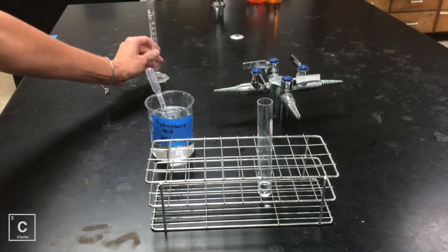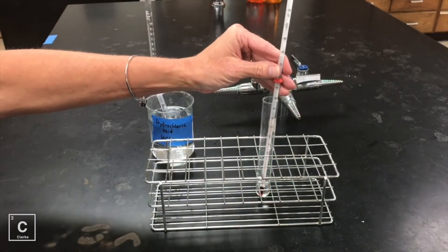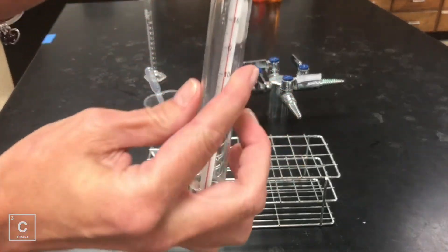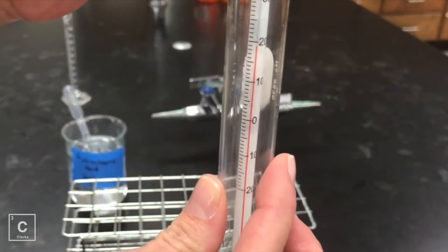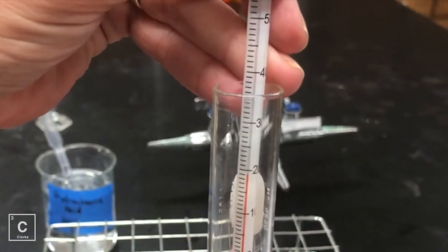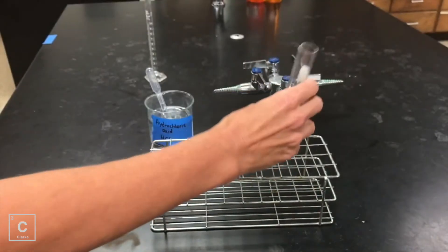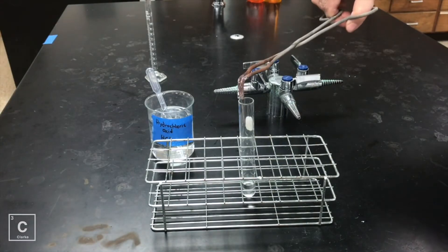And then let's get an initial temperature. Record the temperature of the acid, estimating it to the nearest tenth of a degree. That's going to be degrees Celsius because we're using the metric system in science.